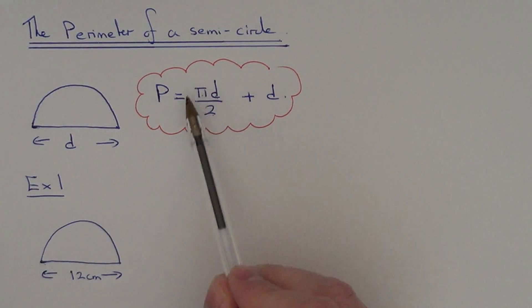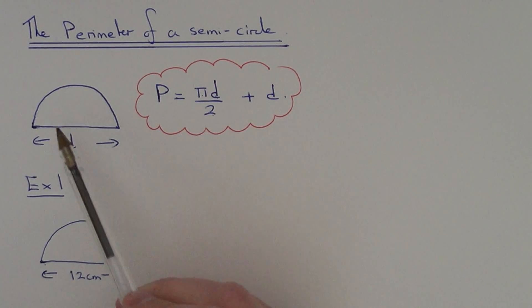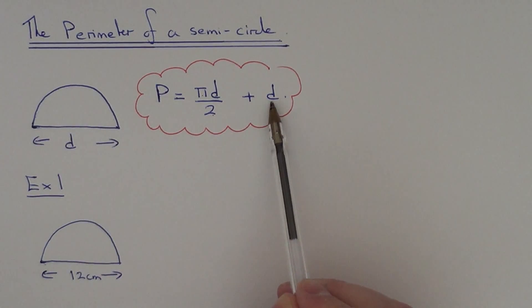Pi times diameter over 2 gives you the length of the arc, and then you have to remember to add the diameter back on at the end, so that's why we have plus d at the end of the formula.